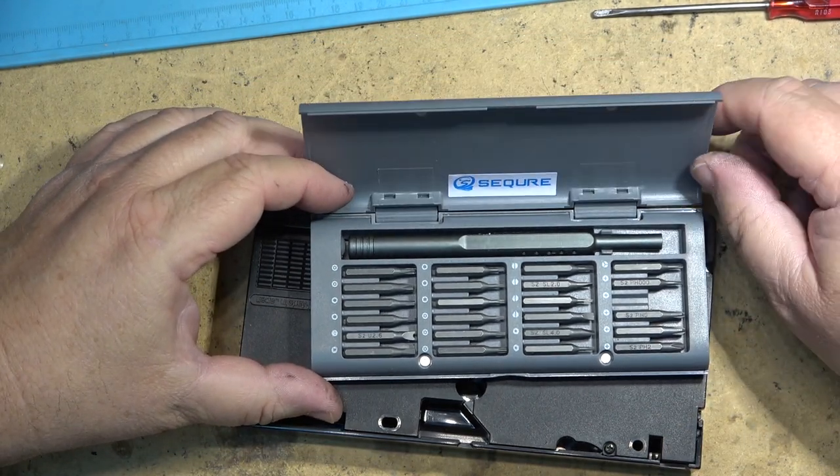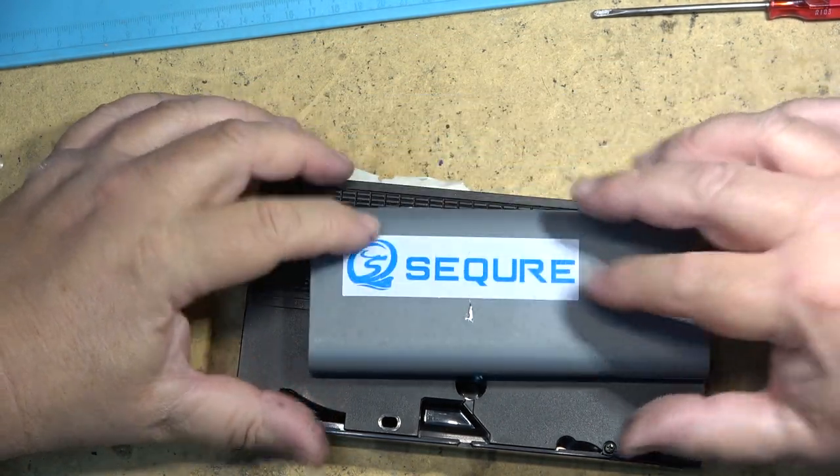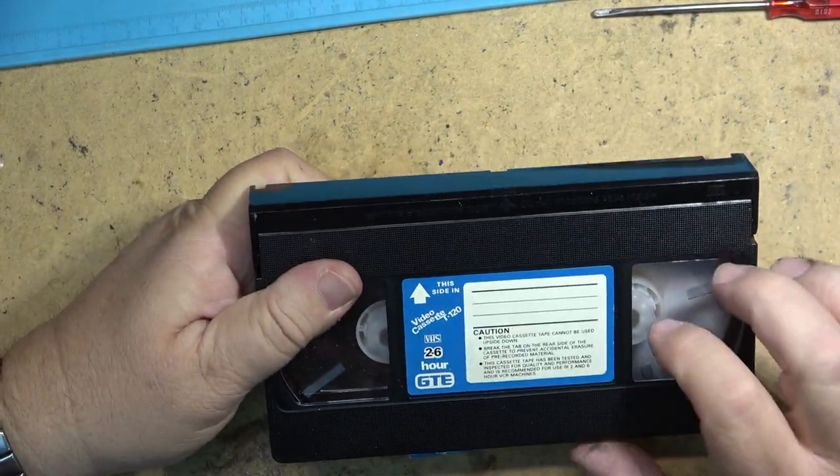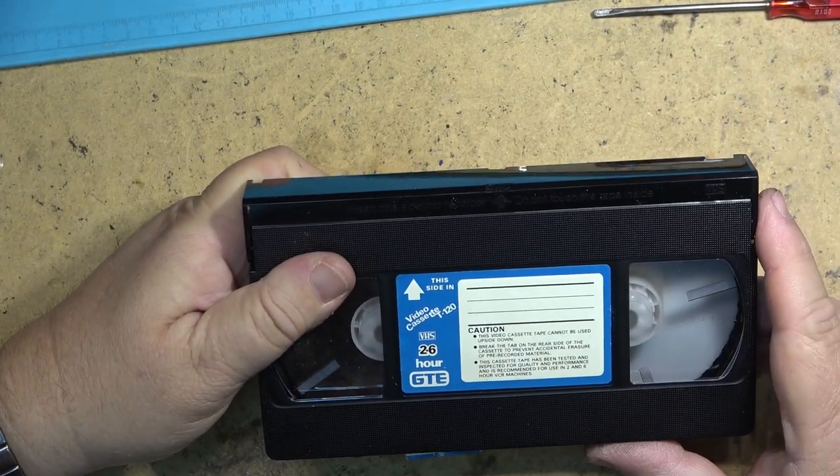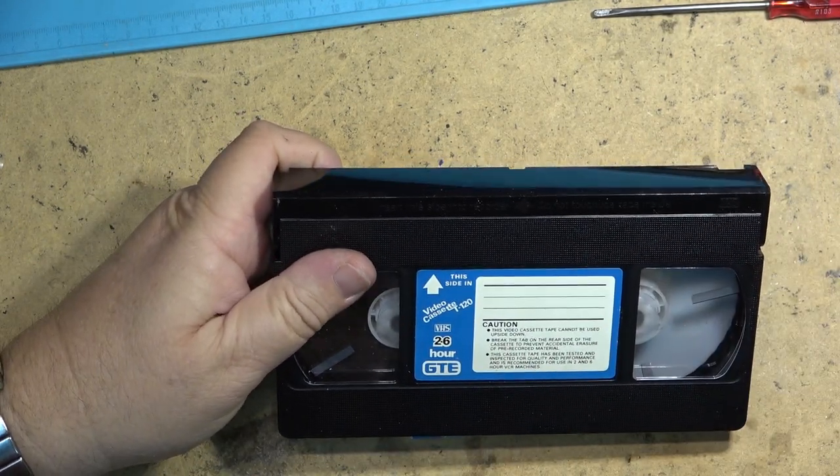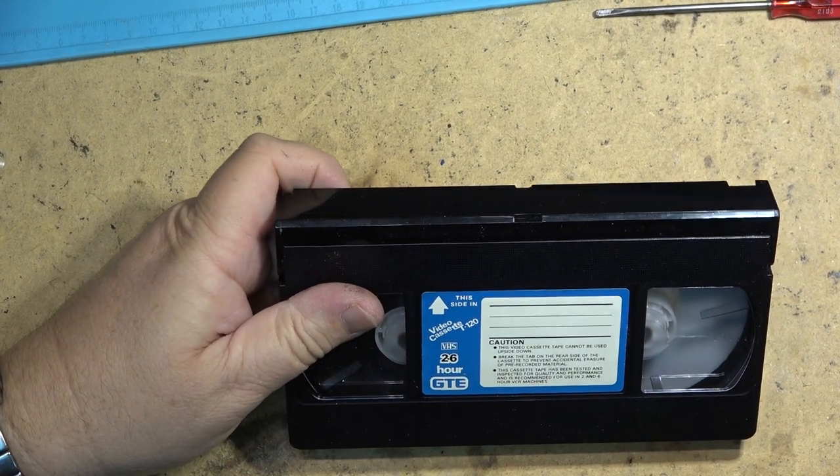But anyway, that's how you quickly repair a tape that's come detached from the take-up spool. Takes only a couple minutes to do it. All you need is a pair of needle nose pliers to pop it back in. Thanks for watching.